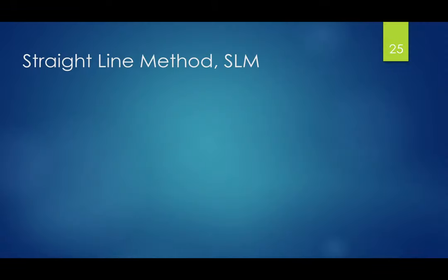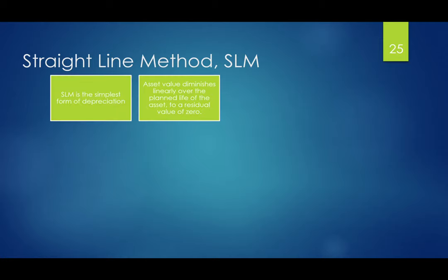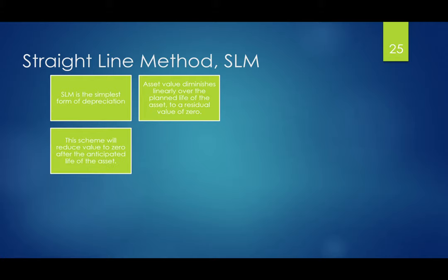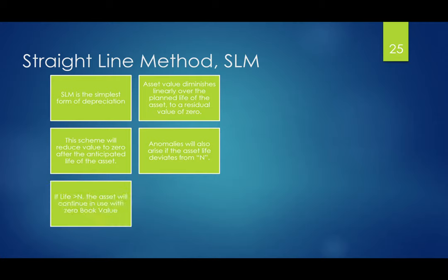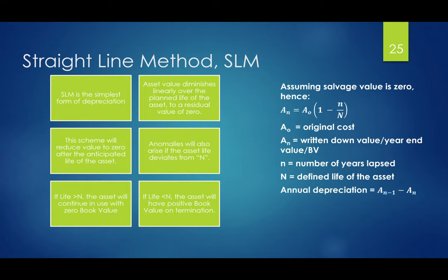The straight line method is the simplest form of depreciation. In this method, the asset value is assumed to diminish linearly over the planned life of the asset, giving a value of zero at the end of the asset's life. This scheme reduces the value after the anticipated life of the asset. Anomalies can arise if the asset life deviates: if the actual life is greater than n, the asset will continue in use with zero book value; if life is less than n, the asset will have a positive book value on termination.